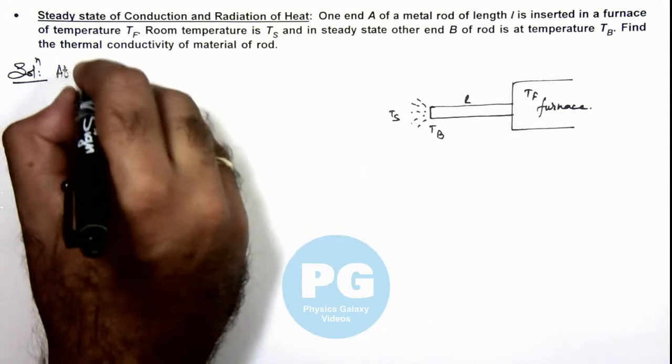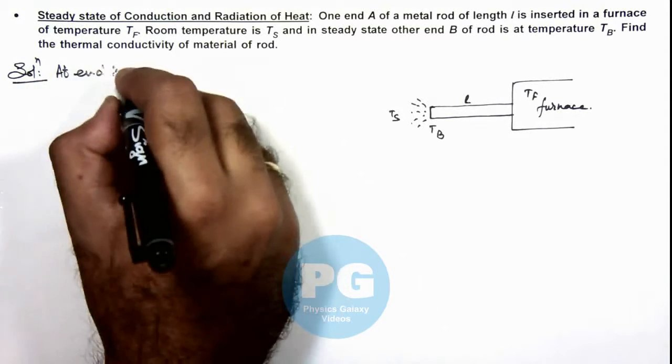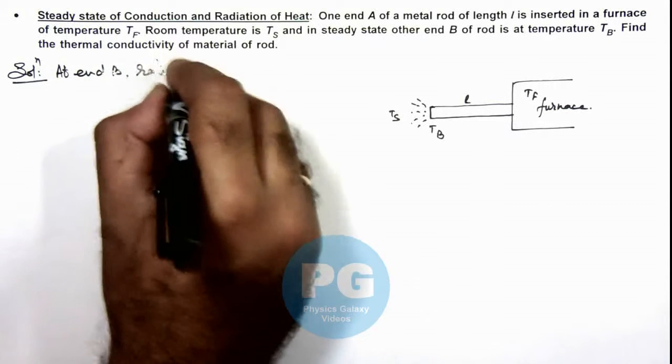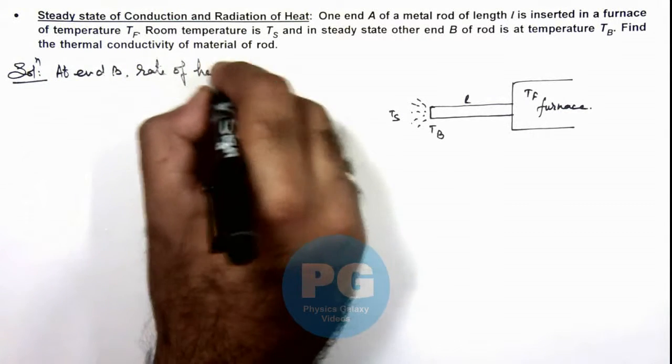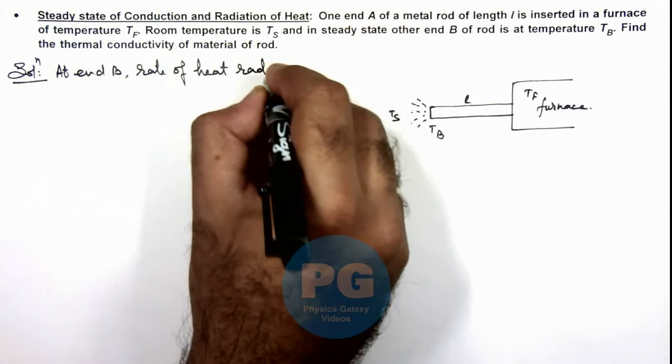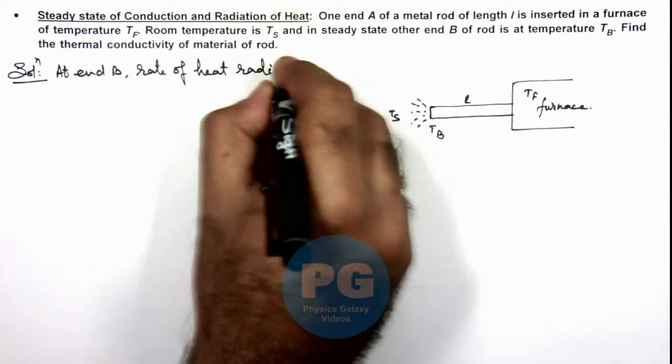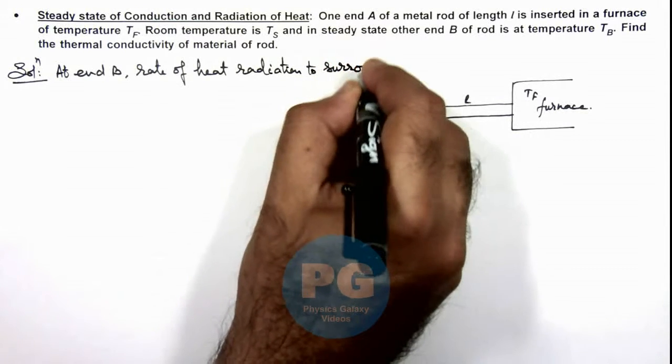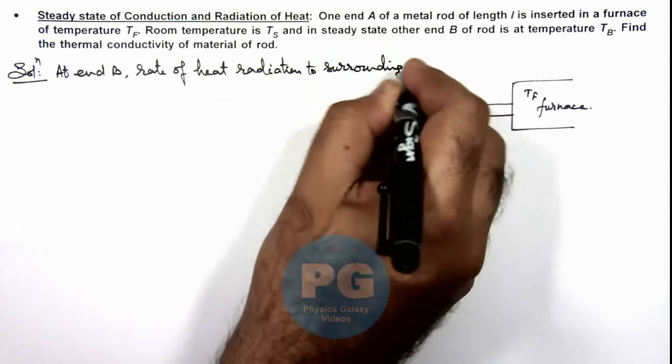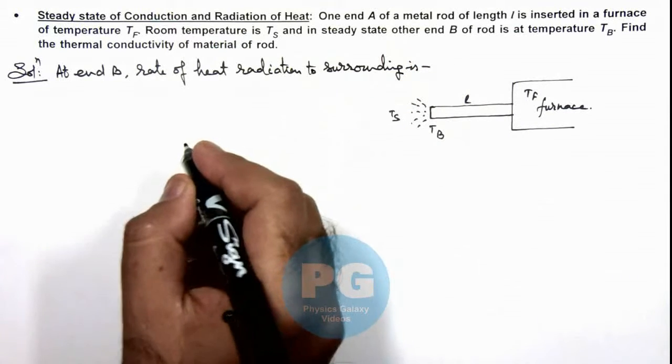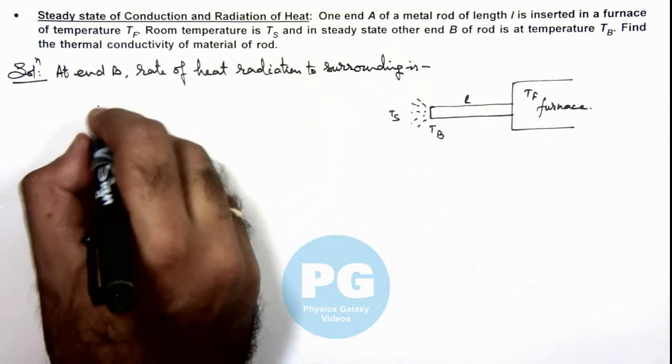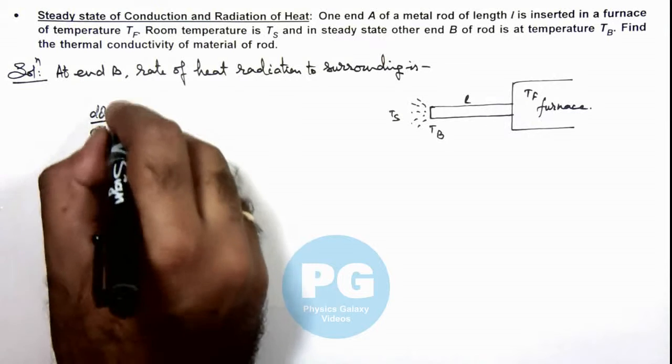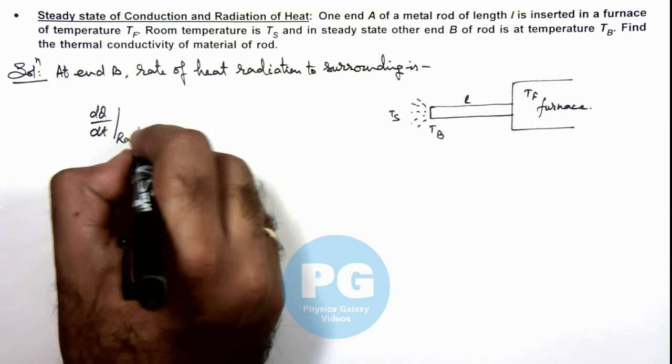rate of heat radiation to surrounding. We can write dQ/dt of radiation.